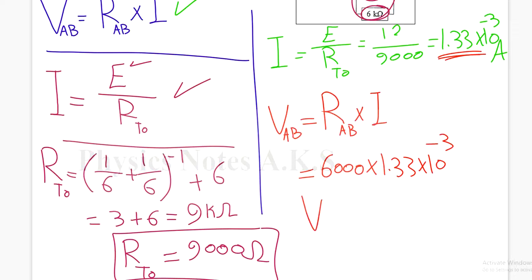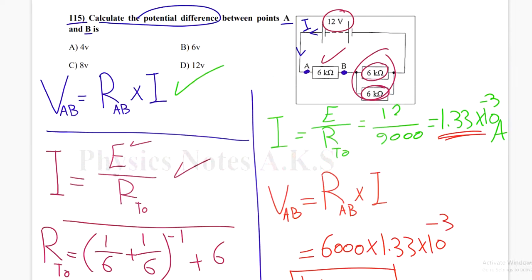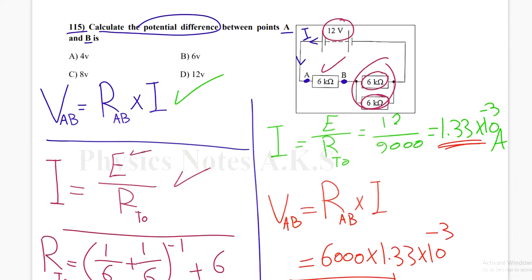This will give me the potential difference between A and B equals 8 volt. So this is the answer. This is the potential difference between points A and B. So I choose the answer C.